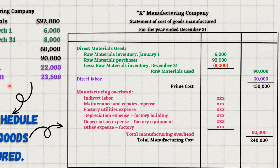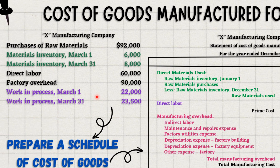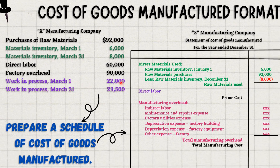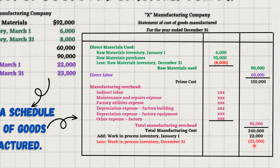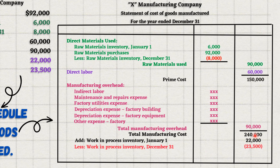Now we will add the beginning work in process inventory of $22,000, and deduct the ending work in process inventory of $23,500. That gives us the cost of goods manufactured of $238,500.